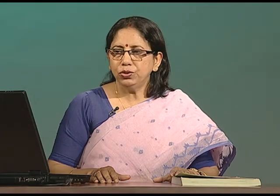In animals there are mainly four types of tissues: the epithelial tissues, the connective tissues, the muscular tissues, and the neural tissues.